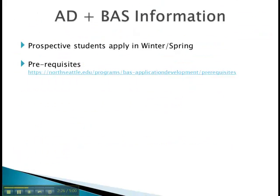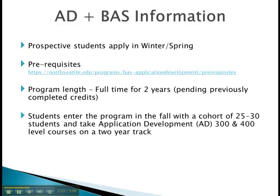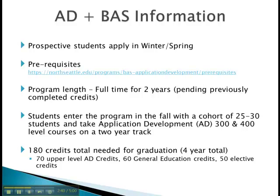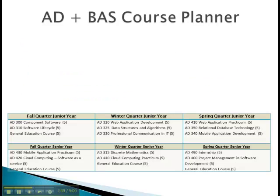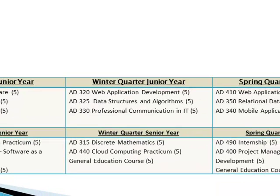Our classes are held in the evening and are geared towards working individuals. The AD BAS program runs on a cohort system with a total of about 25 to 30 students starting each fall quarter. There are 100 total credits needed for graduation: 70 upper-level AD credits, 60 general education credits, and 50 elective credits. A general two-year course planner would look something like this — as you can see, there are at least 10 credits of AD courses expected every quarter, with most of them being about 15 credits.